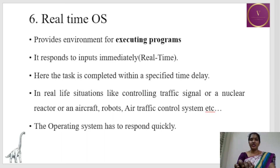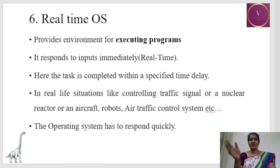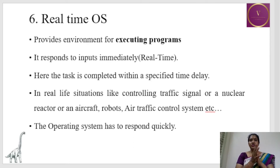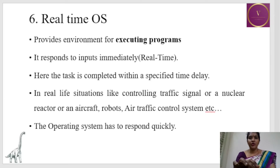Next is real-time operating system. It provides an environment for executing programs and responds to input immediately. The task must complete within a specific time deadline. Real-life situations using real-time OS include controlling traffic signals, nuclear reactions, aircraft, robots, and air traffic control systems. The OS must respond quickly. There are two types: soft real-time OS and hard real-time OS. Soft real-time is used when criticality is lower, and hard real-time is used when criticality is higher.